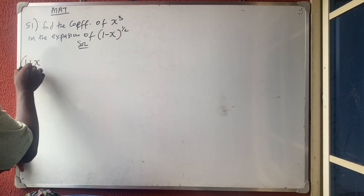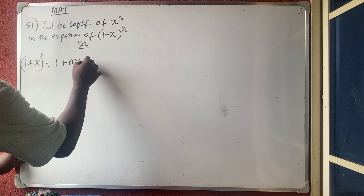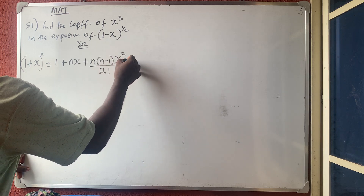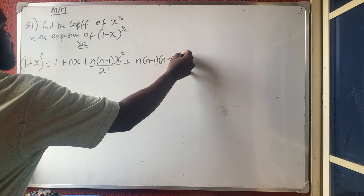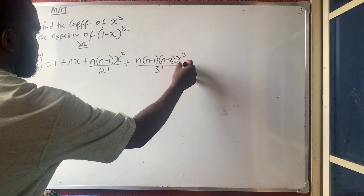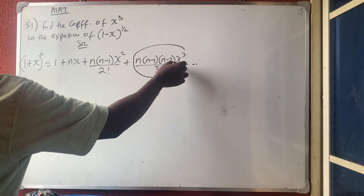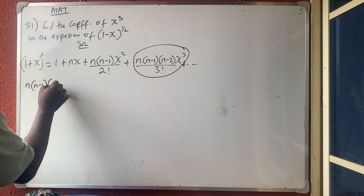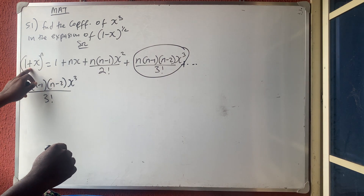We know that (1 + x) raised to power n expands as 1 plus nx plus n(n-1)x² over 2 factorial plus n(n-1)(n-2)x³ over 3 factorial, plus dot dot dot. Since we need the coefficient of x³, we are interested in the term n(n-1)(n-2)x³ over 3 factorial.